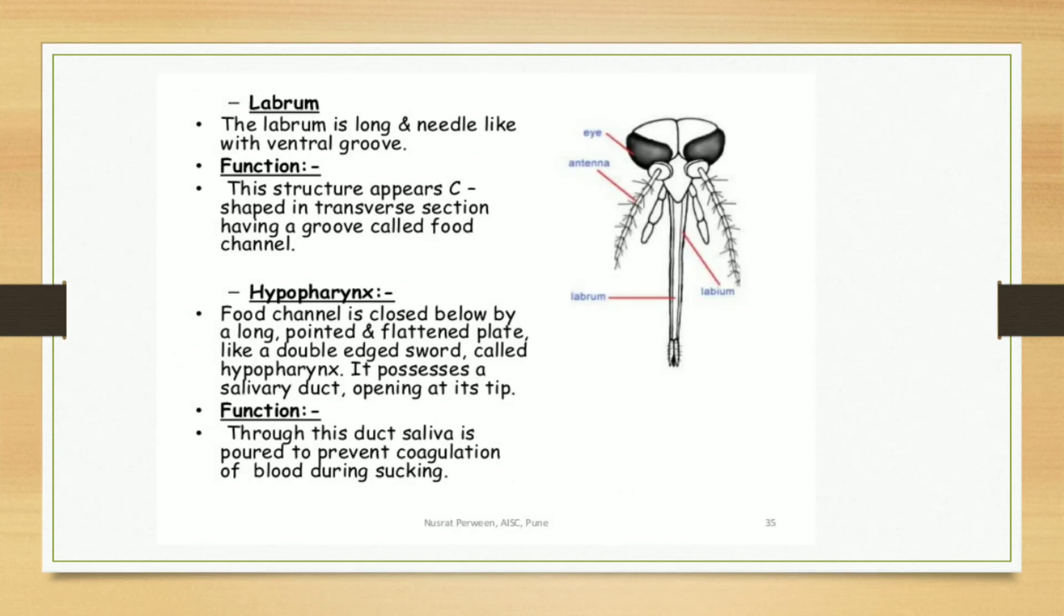Next is the labrum. Labrum is long and needle-like. The function of labrum is that this structure appears C-shaped in transverse section, having a groove called food channel. Then hypopharynx. The food channel is closed below by a long, pointed, and flattened plate like a double-edged sword called hypopharynx. It possesses a salivary duct opening at the tip. Through this duct, saliva is poured to prevent coagulation of blood during sucking.